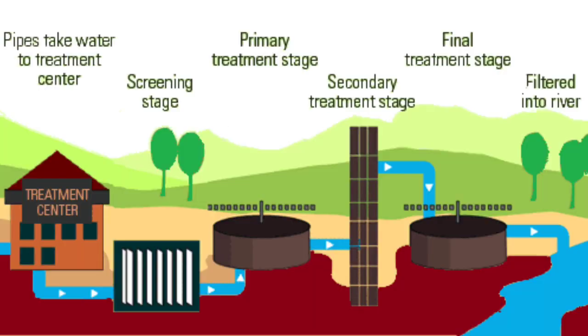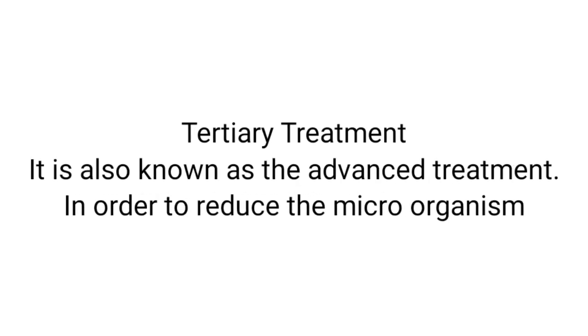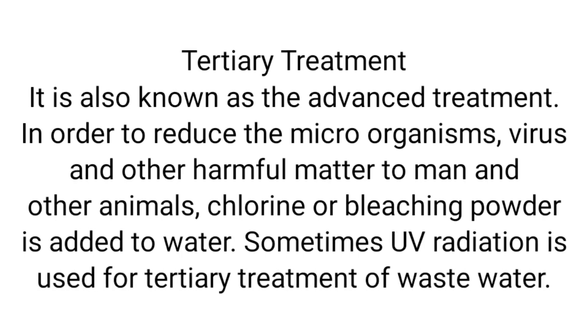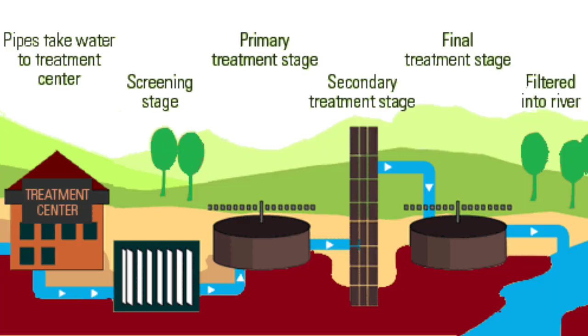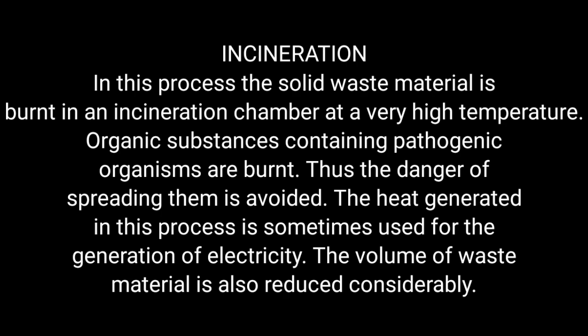The microorganisms consume the organic matter, which reduces the biological oxygen demand to a lower level. After secondary treatment, tertiary treatment — also known as advanced treatment — is performed. Chlorine or bleaching powder is added to remove microorganisms and viruses present in the water, which can be harmful to humans and animals. The filtered water is then ready to be discharged into lakes, ponds, or rivers, or used in agriculture and industrial processes.